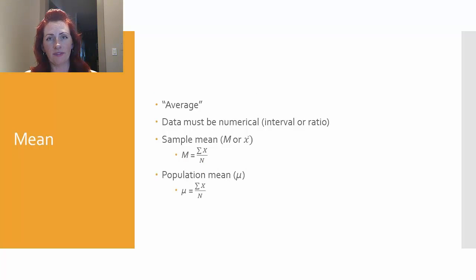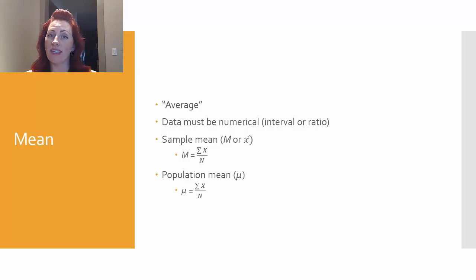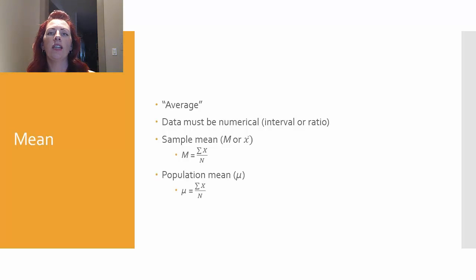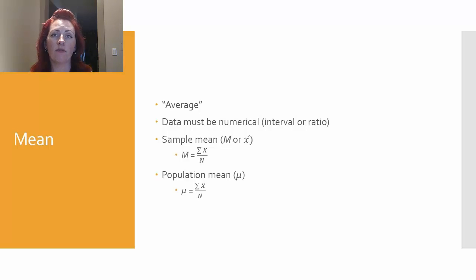The first measure of central tendency we'll cover is the mean. This is the one you're most likely to have heard about before, especially since we often refer to it as the average for our data set. The data must be numerical in order for us to calculate the mean. That means data such as test scores, speed, weight, and height — data points that have numbers that represent them. However, if we have data based on categorical variables that are either nominal or ordinal, such as males and females represented by ones and twos, or positions in a race — first, second, third — we cannot calculate a mean for those data sets because the numbers don't actually represent computational values.